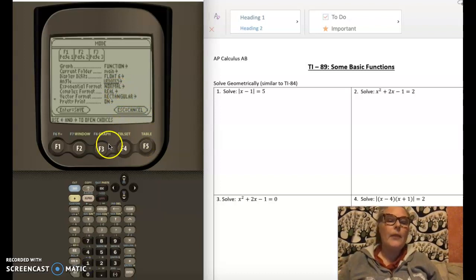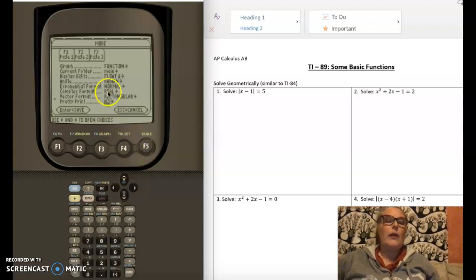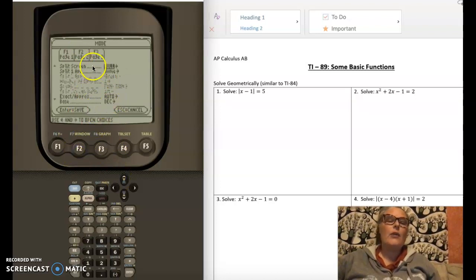We're going to go down to pretty print and make sure it's on. It will give you like with pi in it, it will do radicals and show your answers in terms of radicals, so that makes things a little bit easier. You can either use the arrow down key to go to the next page or you can hit F2 to go to the next page of things.